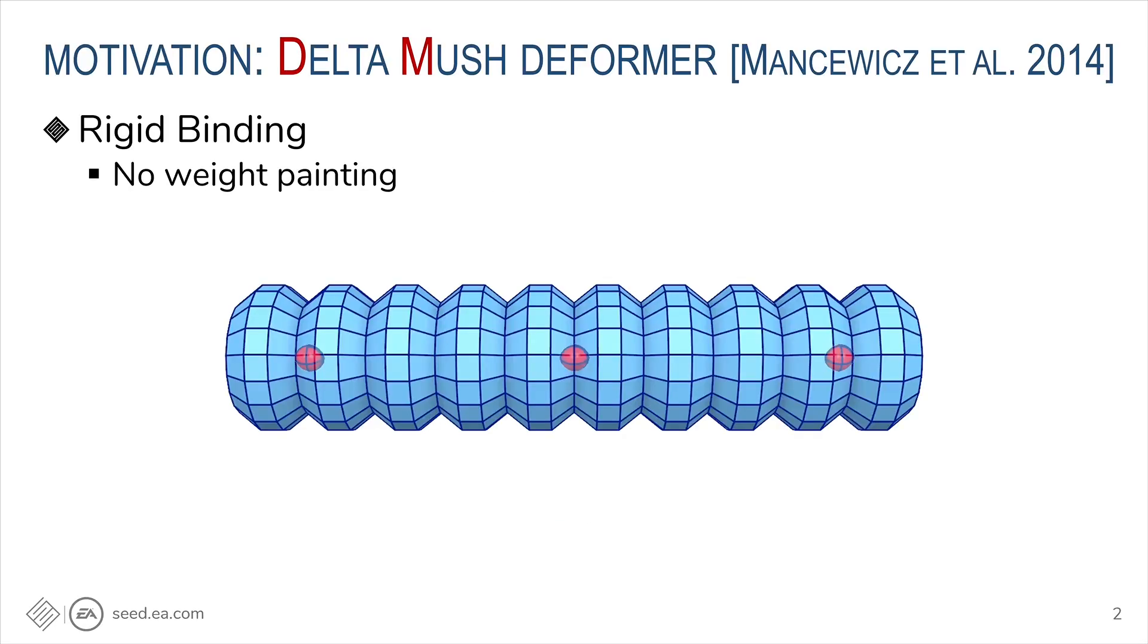So firstly, to set up the background, I'll talk about DeltaMush. It's a quite popular tool in industry. The idea is to reduce the authoring cost by avoiding weight painting.